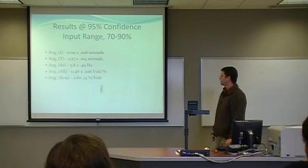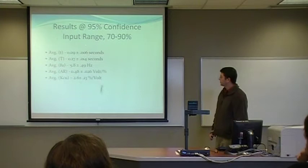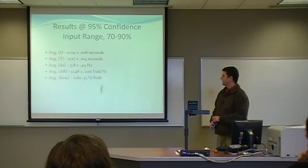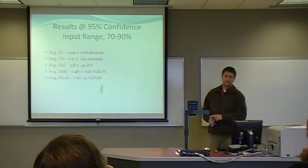5.8 hertz plus or minus about a half a hertz. However, the amplitude ratio is significantly different than the previous one. Before it was 1.5, however, in this one it's only 0.48, and that's plus or minus 0.026 volts per percent. And the average controller gain, ultimate controller gain, is 2.6 plus or minus 0.13 percent per volt.